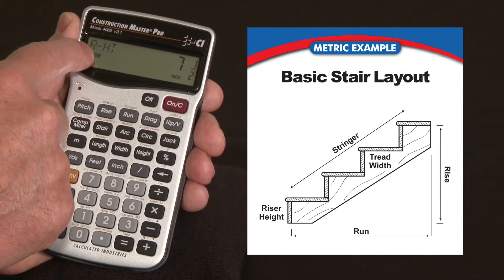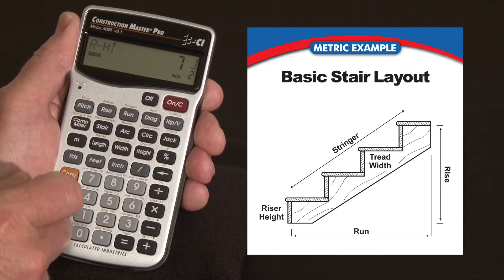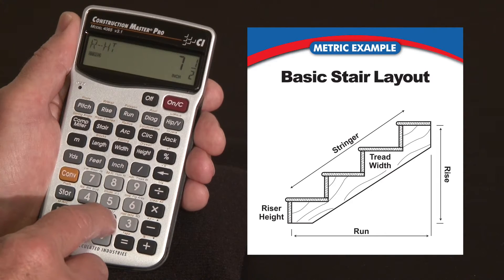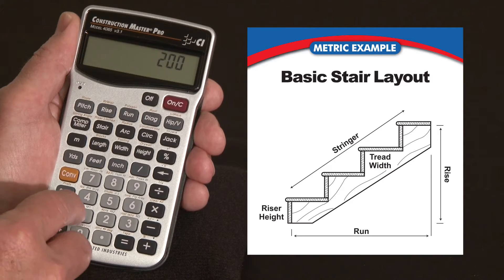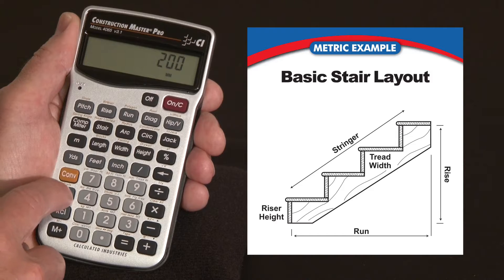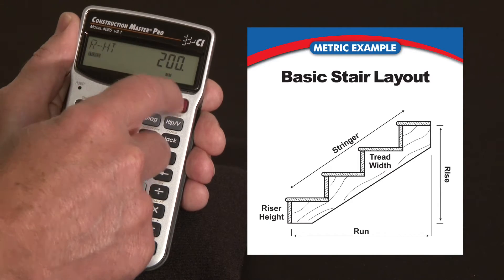Recall over the 7 key here it says riser height 7.5 inches. Now that's the default value here in the States. But for a metric application we might want to use something like 200mm. So let me just hit 200 and then hit convert 9, that's for millimeters, and then I hit store over the 7. It says riser height stored 200mm.